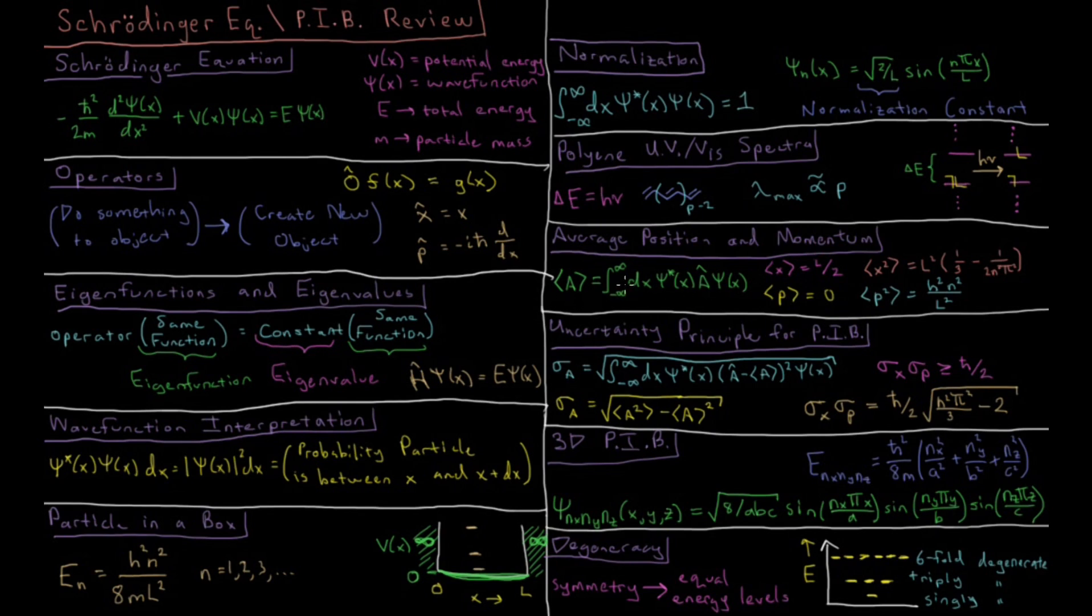If we plug in this formula for the operators of position and momentum, we find average position is in the middle of the box, L over 2, average momentum is 0. And then you can act on an operator subsequently again. You can say x squared, which is just acting on x twice, or p squared, which is just doing p twice, which would be minus h bar squared times second derivative with respect to x. And then you get these values here for what the expectation of x squared and p squared are.